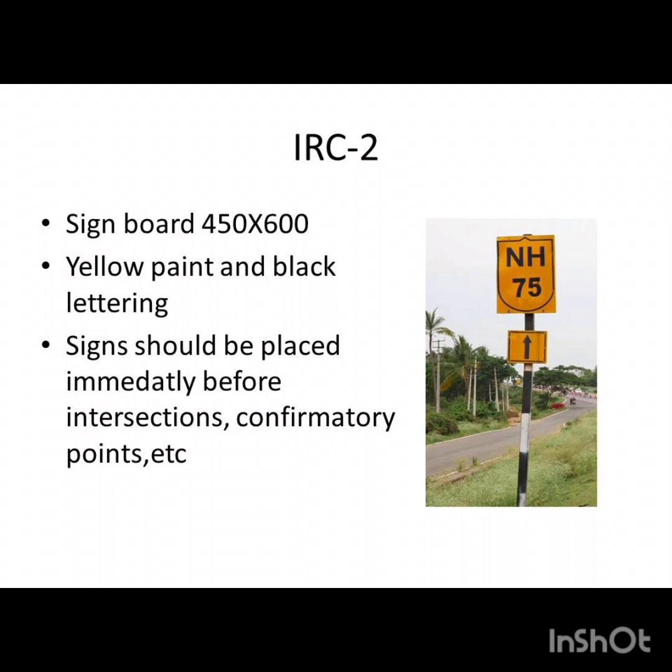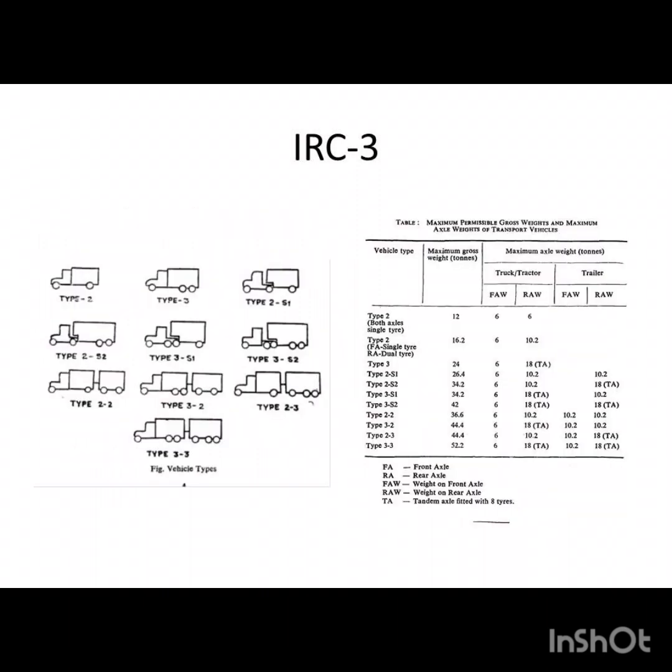Next, ISC 3 also has some very important points. What are the types of vehicles? There are many types of vehicles based upon the number of wheels, etc. There is Type 2, where there are two axles, and Type 3, where there are three axles.